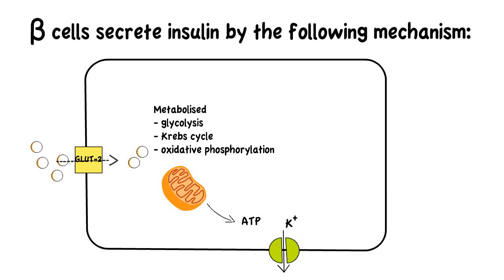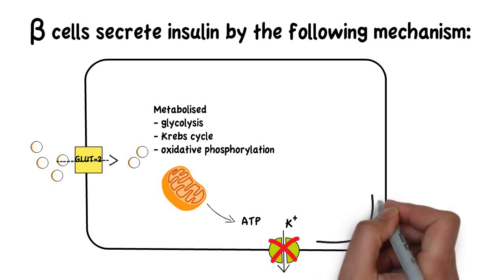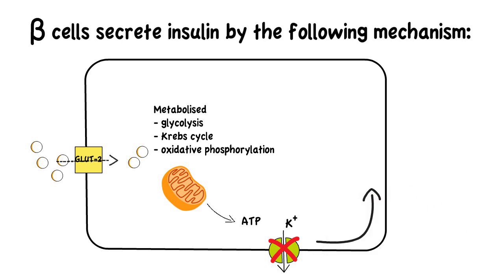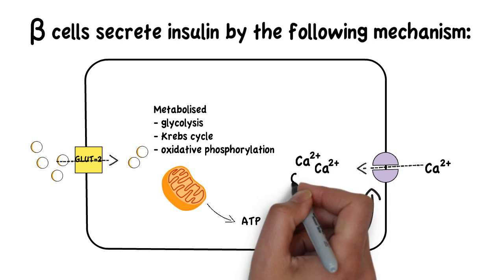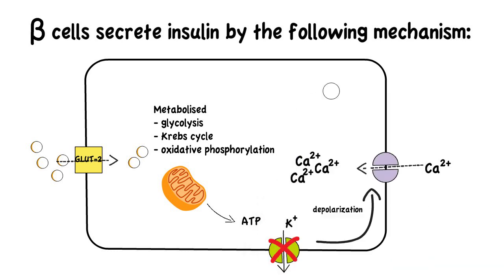ATP-sensitive potassium channels then close, resulting in the depolarization of the beta cell membrane. Consequently, voltage-gated calcium channels open, which increases intracellular calcium concentrations. This induces the exocytosis of the insulin-containing secretory vesicles.